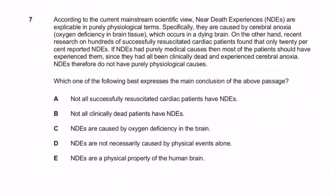Watch how I do this one, then for further questions you can time yourself and test yourself. Question 7 asks 'which of the following best expresses the main conclusion of the above passage?' — I know it's a conclusion question, so conclusion cap on. The first sentence reads: 'According to the current mainstream scientific view, near-death experiences are explicable in purely physiological terms.' This is factual — he's stating someone else's view as a fact, not expressing his own opinion — so we cross this out.